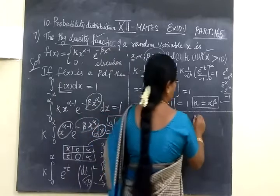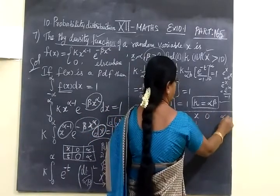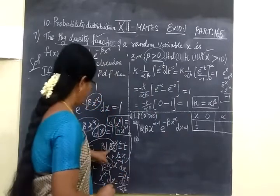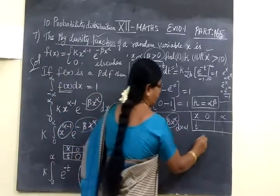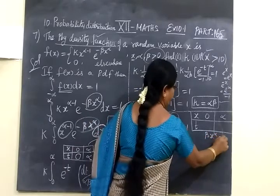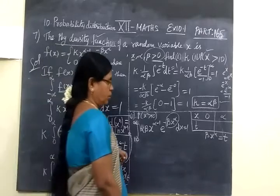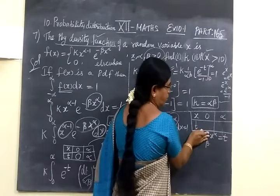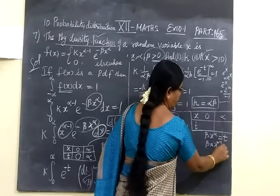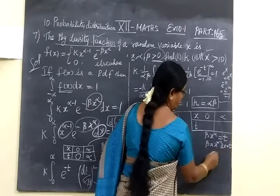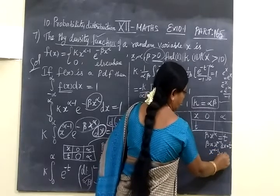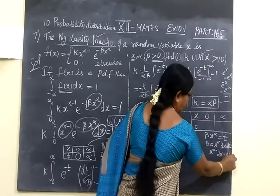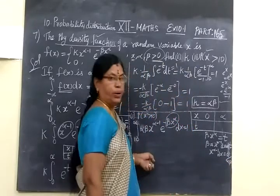Here also we apply the same substitution: let β·x^α equal to T. Differentiating: α·x^(α-1) dx equals dT, so x^(α-1) dx equals dT by αβ. Now we apply the changed limits. When x equals 10, T equals β·10^α; when x equals infinity, T equals infinity.